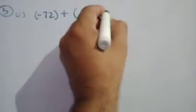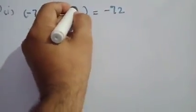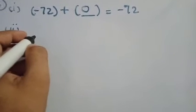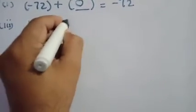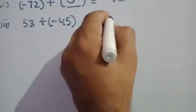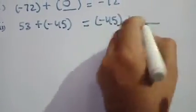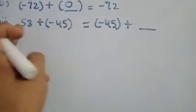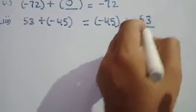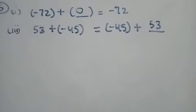Question number 5: Fill in the blanks. Part 1: minus 72 plus what equals minus 72? If minus 72 remains the answer, you add 0. Part 3: 53 + (minus 45) = (minus 45) + what? According to the commutative property of addition, minus 45 appears on both sides, so 53 will go in the missing place. I hope you understand this question.